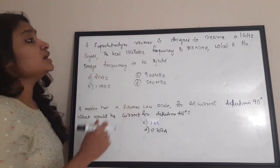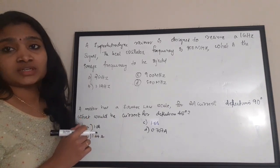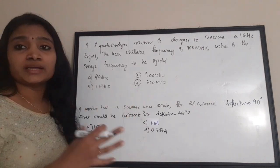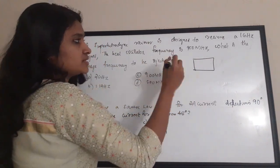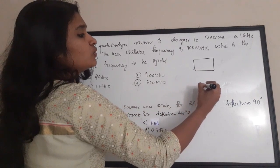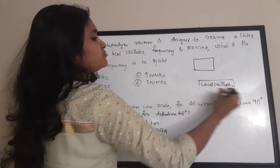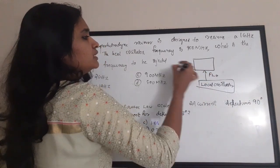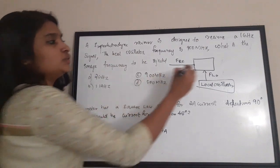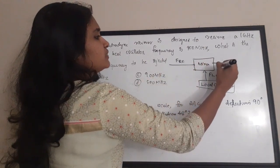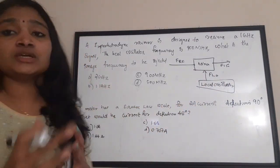The RF signal frequency is 1 gigahertz and the local oscillator frequency is 900 megahertz. What is the image frequency to be rejected? In a super heterodyne receiver, there is a mixer stage where the RF signal is mixed with the local oscillator signal to produce an intermediate frequency (FIF).